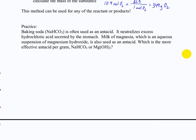Let's try another one, a little bit trickier. Baking soda is used as an antacid — it neutralizes excess hydrochloric acid secreted by the stomach. Milk of magnesia, which is an aqueous suspension of magnesium hydroxide, is also used as an antacid. So which is the more effective antacid per gram — quantitatively — sodium bicarbonate or magnesium hydroxide? What this is really asking is which one neutralizes the most acid per gram. So we have to write a reaction of each reacting with acid and do some calculations.